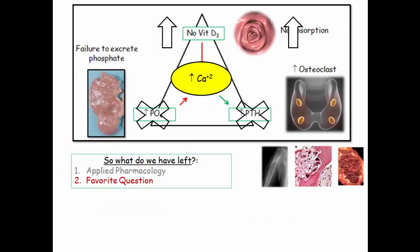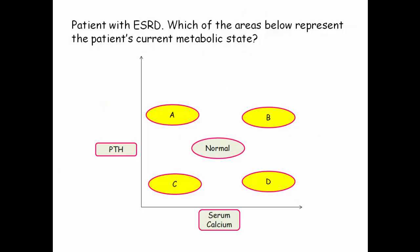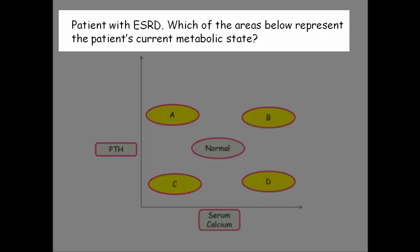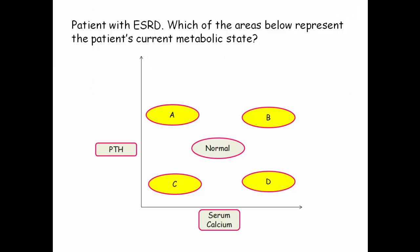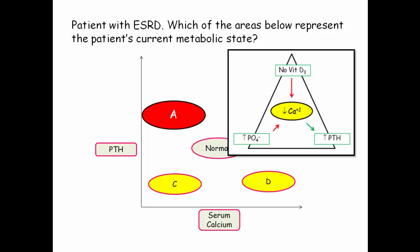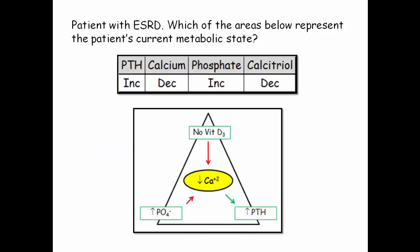Here is the classic question used to assess your understanding of the processes reviewed in this presentation. The key derangement is the low calcium and the body's physiologic response. The answer is low calcium, high PTH. This question might also appear as a table with the same implication.